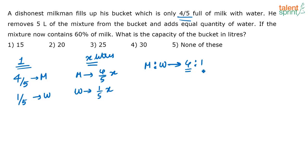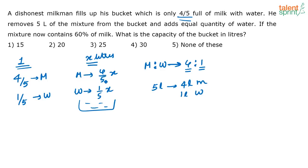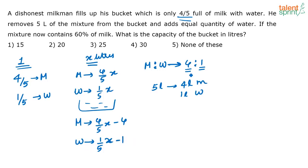For every four liters of milk there is one liter of water. So when removing five liters of mixture from the bucket, four liters will be milk and one liter will be water. The total milk was four-fifths x. After removing five liters, the remaining milk is (4/5)x minus 4, and the remaining water is (1/5)x minus 1.